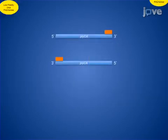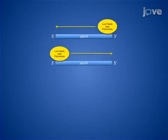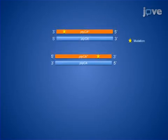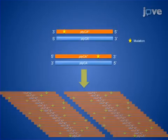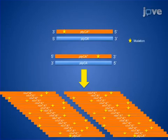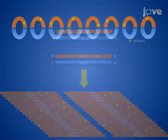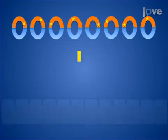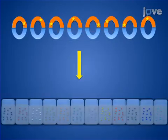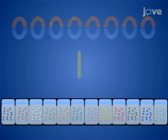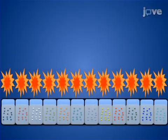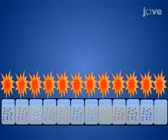Next, use the error-prone polymerase chain reaction to generate the mutant library. Screen the mutant library using the heating conditions elucidated during the first step.